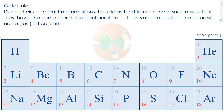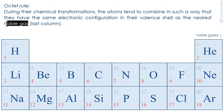What governs the evolution of elements is called the octet rule. During their chemical transformations, the atoms tend to combine in such a way that they have the same electronic configuration in their valence shell as the nearest noble gas.